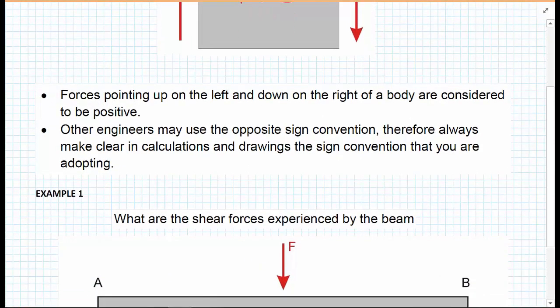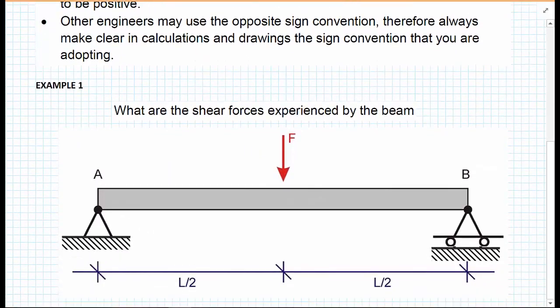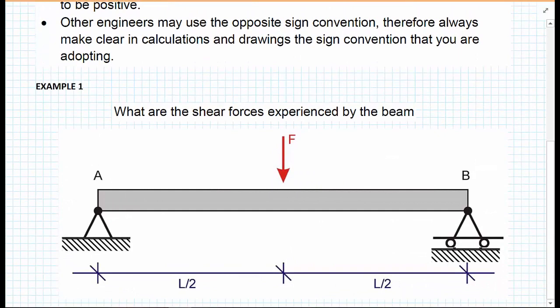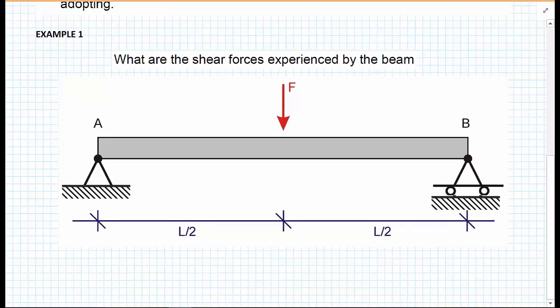We're going to show an example of how we calculate a shear force diagram for a beam. We can then use these shear force diagrams in design, but for this course we're just looking at how to draw the diagram. We have a simply supported beam with a pin support on the left-hand side, a roller support on the right-hand side, and right in the middle a point load F at a distance L/2 from either support.